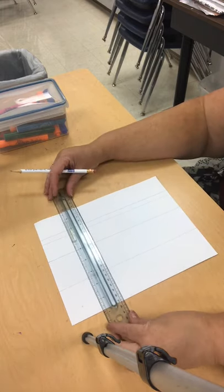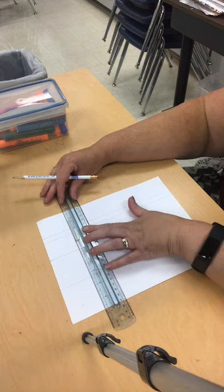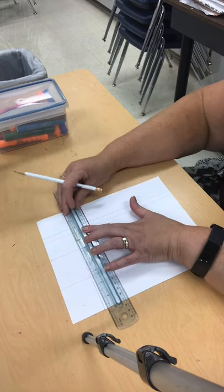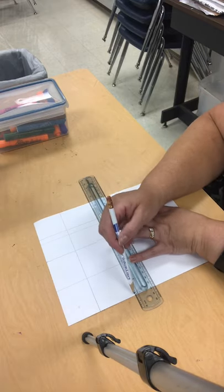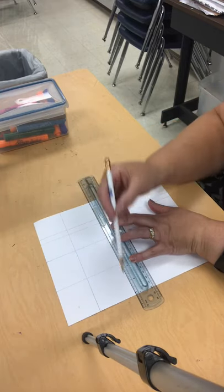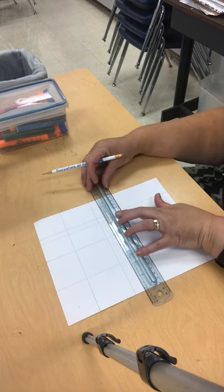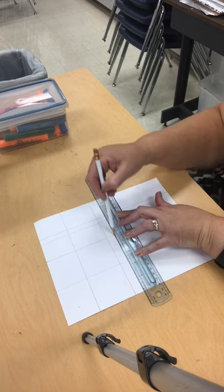Okay, so turn your ruler upside down and now you're going horizontal. Your lines are going side to side all the way across. Move down a little bit. Make sure it's straight all the way across.